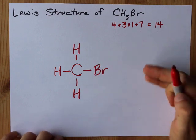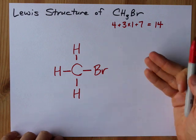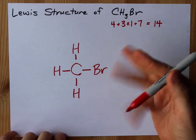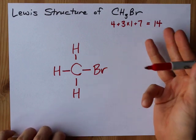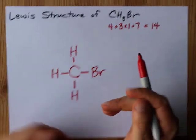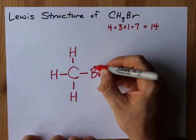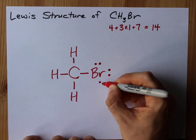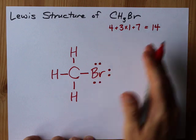What I do next is I fill the outer atoms as octets. Bromine doesn't always follow the octet rule. It often can have 10 or 12 or 14 electrons around it. But that's generally when it's the central atom. Here, it is going to follow the octet rule. Here is my 9th and 10th electrons. 11, 12, 13, 14. Now I'm out.